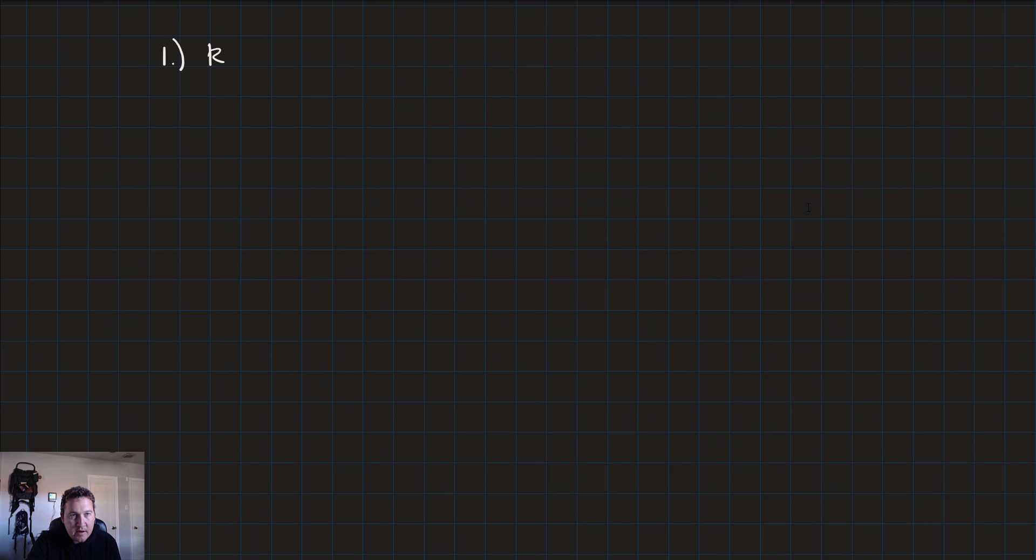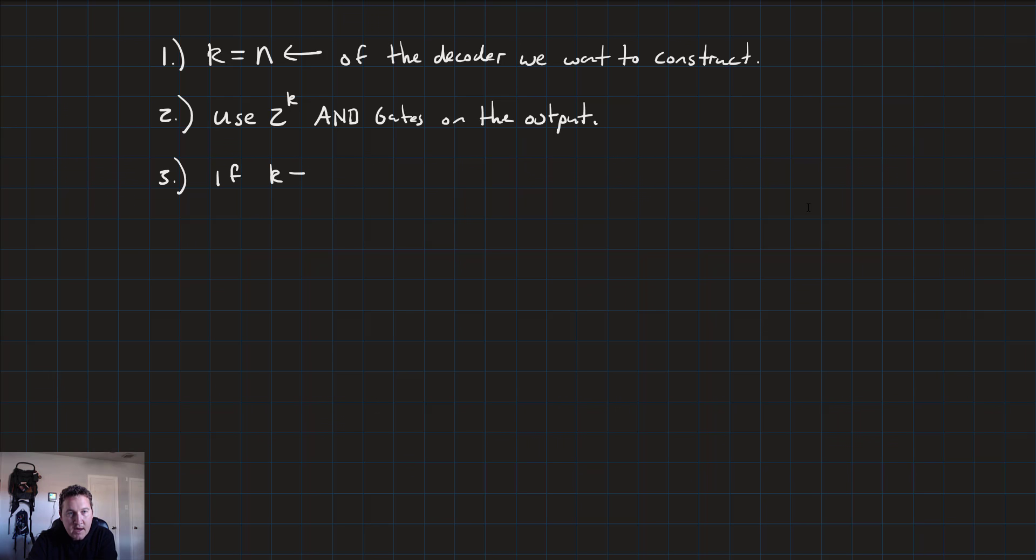We'll set a variable k equal to the n of the decoder we want to construct. Then step two is use 2^k AND gates on the output. And we'll see what that looks like when we do an example. Step three says if k is even,